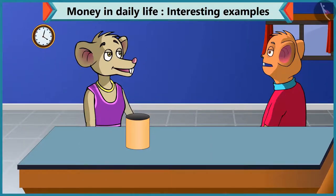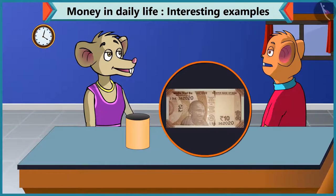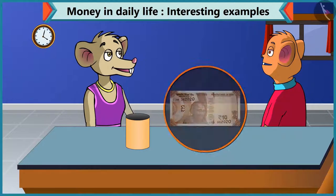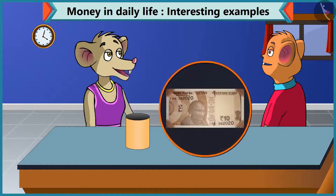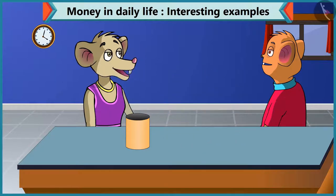Choo Choo says: I want to buy a new pen. Can you lend me 10 rupees please? Chi Chi responds: Yes, of course — but I don't have a 10 rupee note. How can I give you 10 rupees then? Choo Choo replies: Don't worry Chi Chi. Do you have coins?